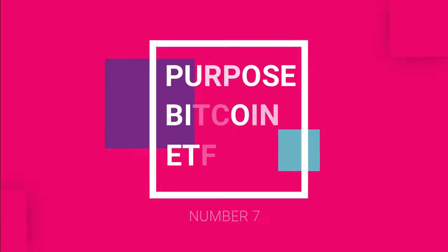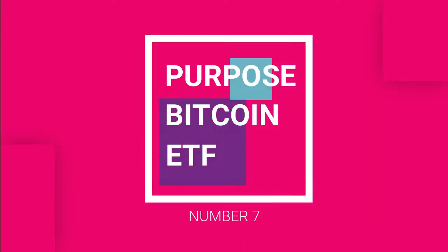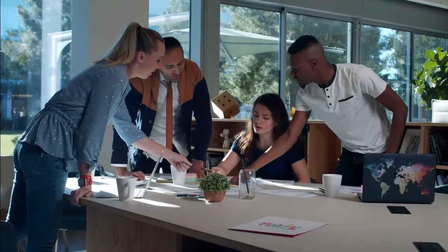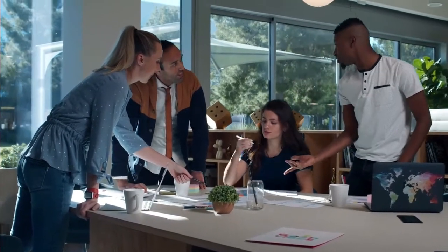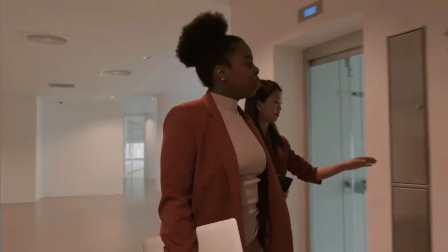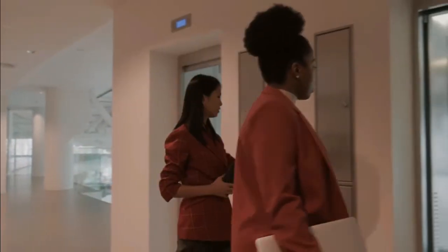Number seven is Purpose Bitcoin ETF. Purpose is a wealth management firm that manages more than $10 billion in cash and delivers several managed and quantitative investment options with an unwavering emphasis on client-centric creativity. The group is a subsidiary of Purpose Financial, an independent technology-driven financial services platform that is reshaping the market by linking and building opportunities through asset management.